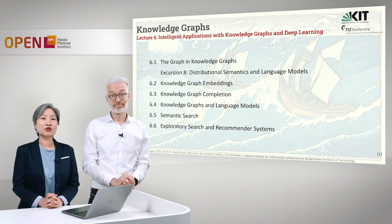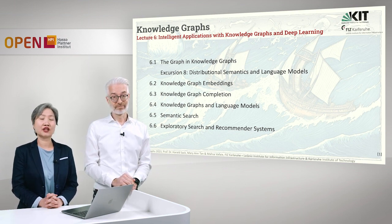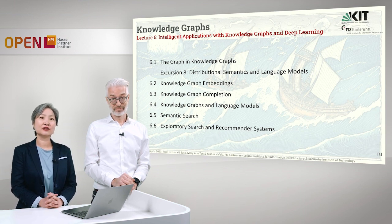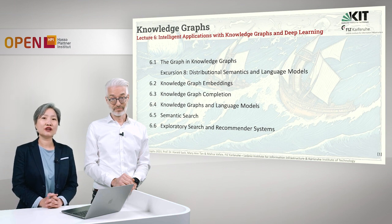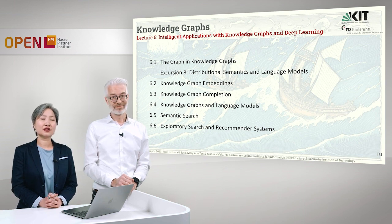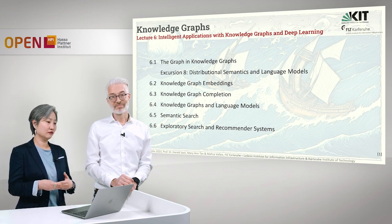In 6.2, we will introduce Knowledge Graph Embeddings, particularly the construction kit. Here we will introduce the normal or usual scoring function, the Knowledge Graph Embedding techniques, the loss functions, as well as other details such as what kind of knowledge Knowledge Graph Embeddings actually include.